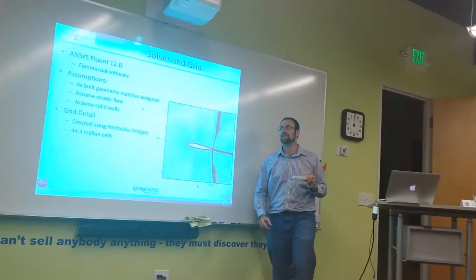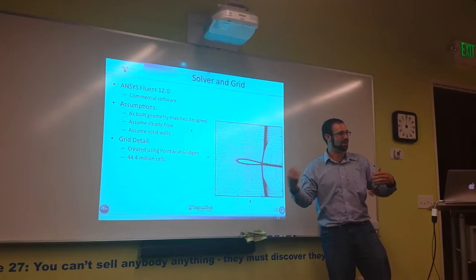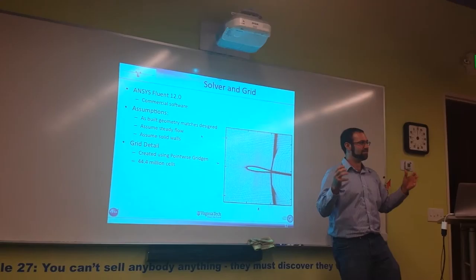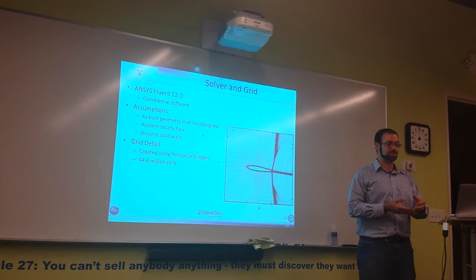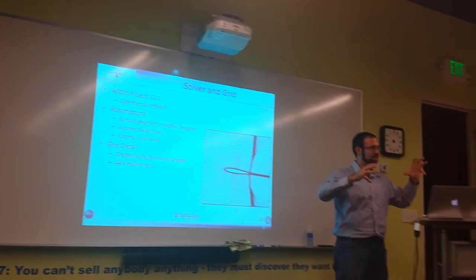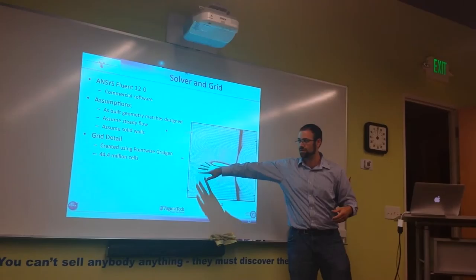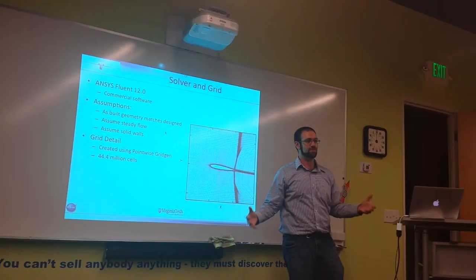That's basically what we're doing here, except we have millions of these little boxes. We're just calculating how much air is going in and how much air is going out of millions of boxes. That's our computational domain. That's our virtual wind tunnel, if you will. We use the software called ANSYS, which does the calculations. And our assumptions are the as-built geometry matches the design. This doesn't always happen. Those walls might be a little bit different because of heat constraints, or because maybe a builder was sloppy. That's a pretty big assumption. We also assume steady flow and solid walls. And finally, this is just for the geeks in the room, it's created using Pointwise Gridgen and it has 44.4 million cells.